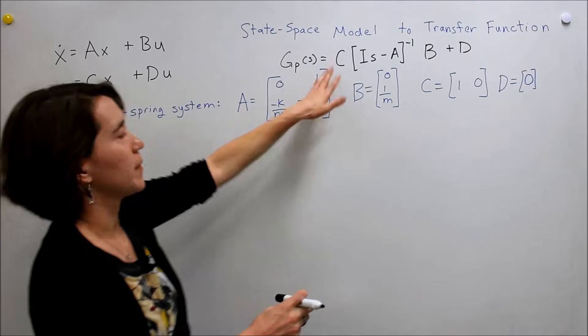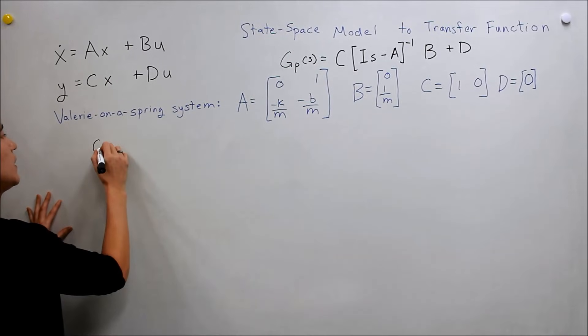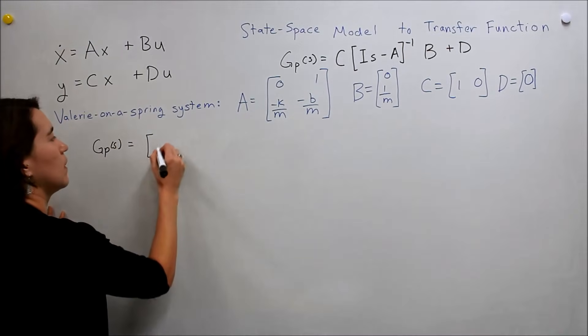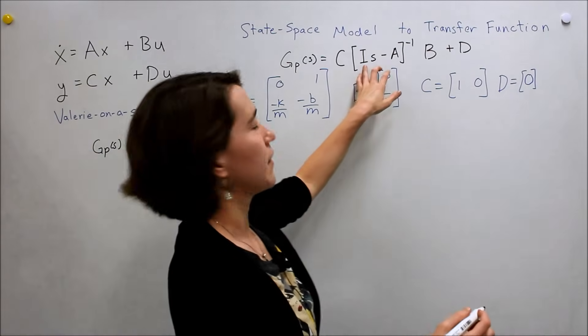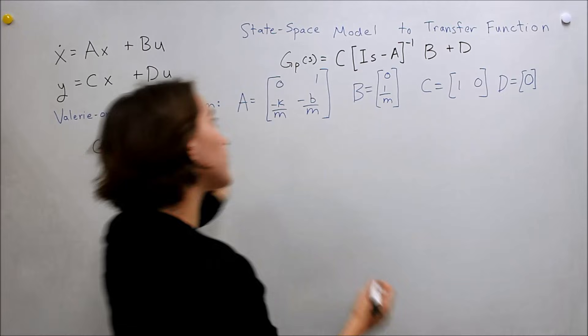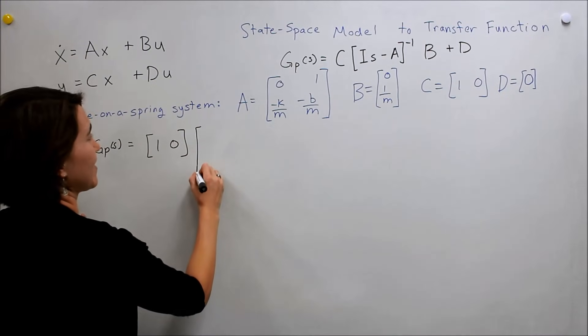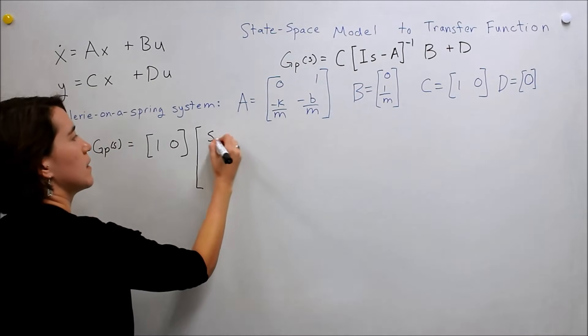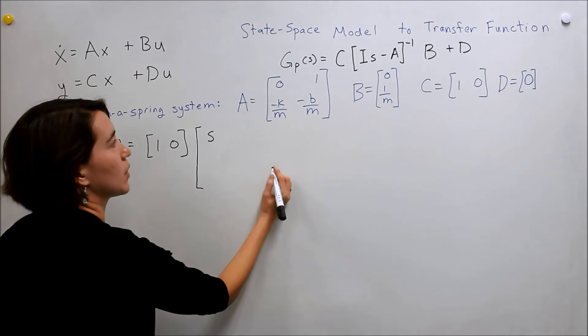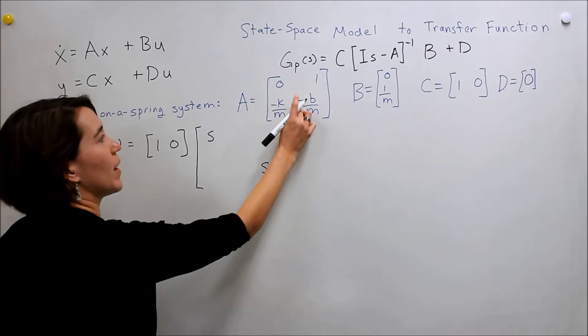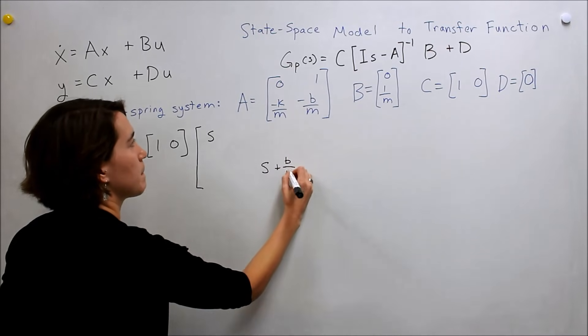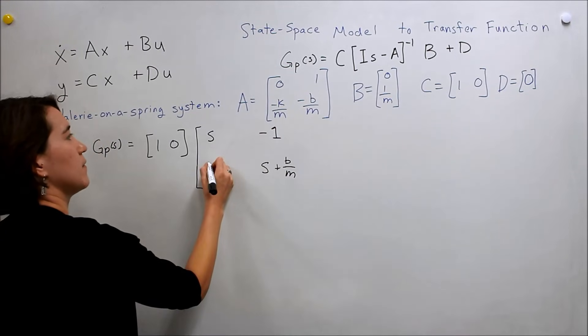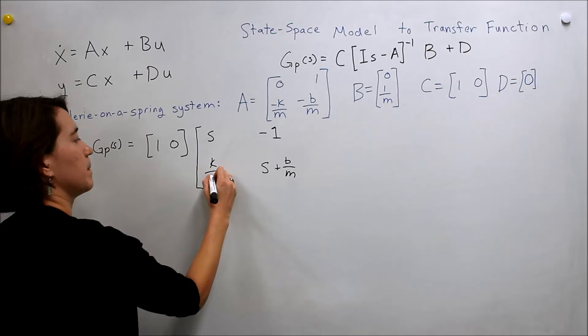Okay. So let's start by just writing everything out. So gp of s is going to be equal to c, one, zero, and then the identity times s minus a. And we're going to take the inverse of that. So we'll start by just writing this out. So it would be s minus zero. And here, the lower bottom right, would be s minus this value, so plus b over m. And then here we would just get negative, so we get negative one here. And then a positive k over m here.